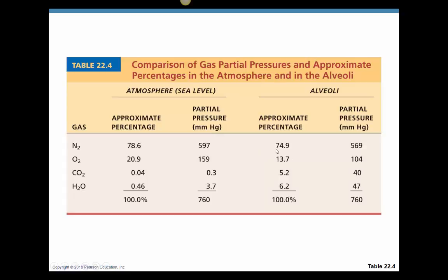We don't use nitrogen in our body, so it is not going to cross the membrane and be actively transported throughout the blood. We are going to focus specifically on carbon dioxide and oxygen as the primary gases exchanged across the respiratory membrane. When we talk about partial pressure, if the total air pressure is 760 mmHg and 6.2% of that is water, then 760 times 6.2% gives us 47 mmHg. These are the partial pressures — PO2 and PCO2 — and we're focusing primarily on oxygen and carbon dioxide.